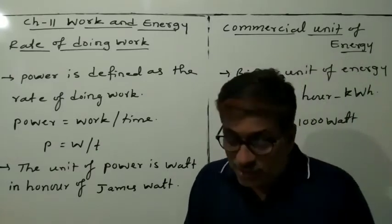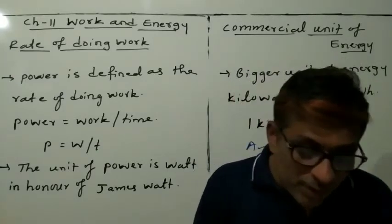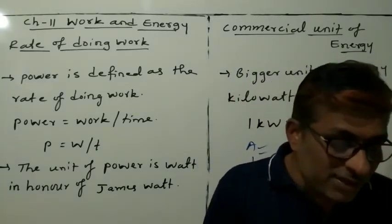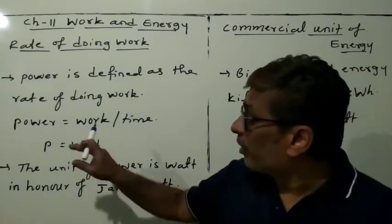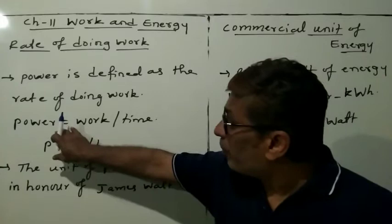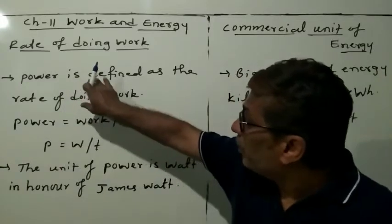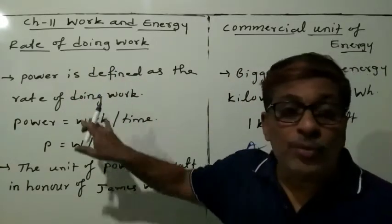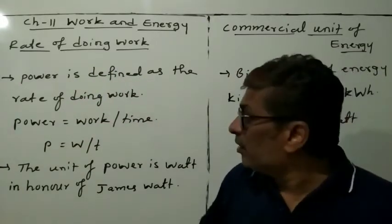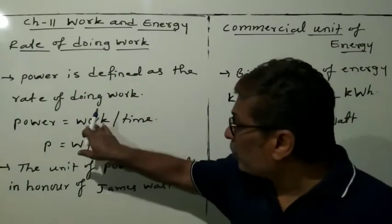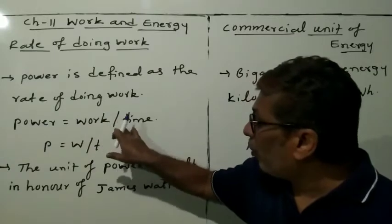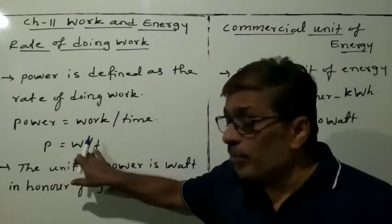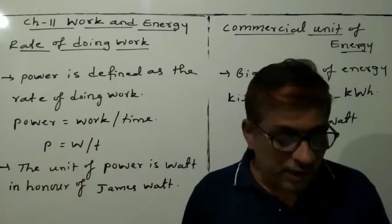Power measures the rate of doing work. Power is defined as the rate of doing work. So, power is equal to work divided by time: P = W / T.